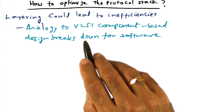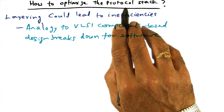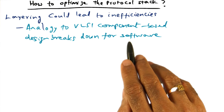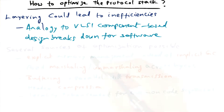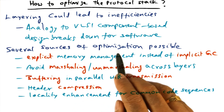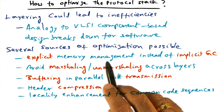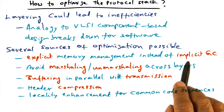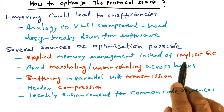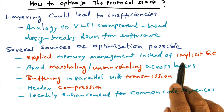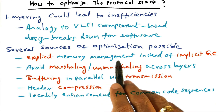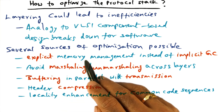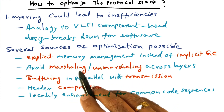So we have to do the extra work needed to optimize the component-based design so that it can perform well. Fortunately, there are several sources of optimization that are possible. For instance, OCaml has implicit garbage collection, which is good as a fallback, but maybe we don't want to use it all the time — being explicit about how we manage our own memory can be more efficient. That is a source of optimization.